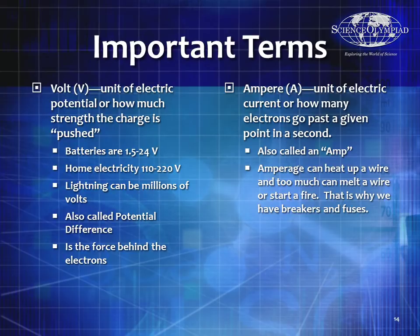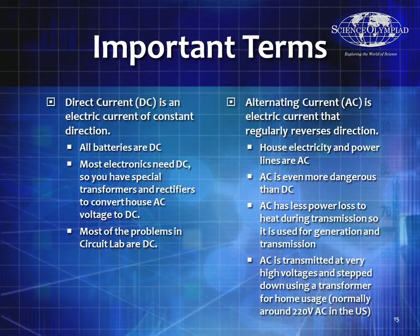The ampere is a unit of electric current, or how many electrons go past a given point in a second — usually measured in coulombs per second. Also called an amp. Too much amperage can heat up a wire, melt it, and start a fire — that's why we have breakers and fuses. Direct current is electric current that goes in the same direction. All batteries are DC. Most electronics need DC, so you'll need special transformers and rectifiers to turn wall AC current into DC current.